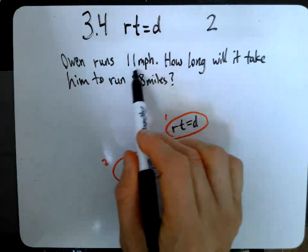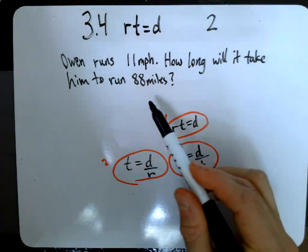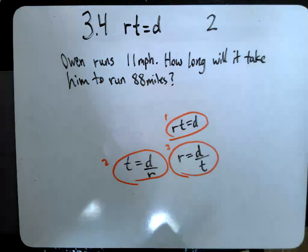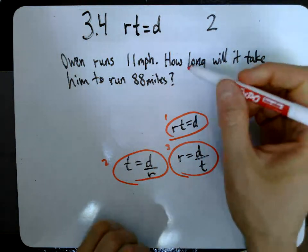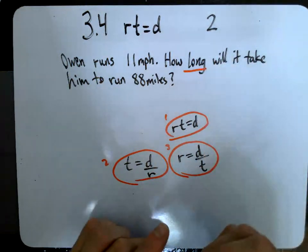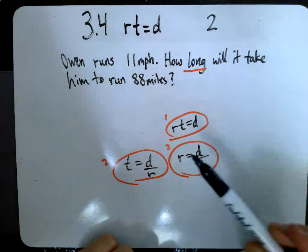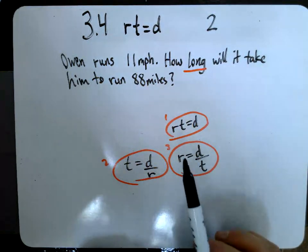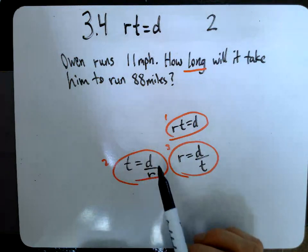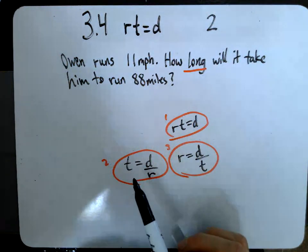So that represents his average speed. And we want to calculate the time, right? That's what we're asked to do, how long. So what we're missing is time. So I'm going to look at these three equations and choose the one that has me solving for time, and that's this one, number two.